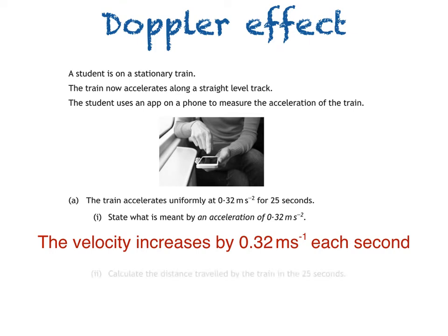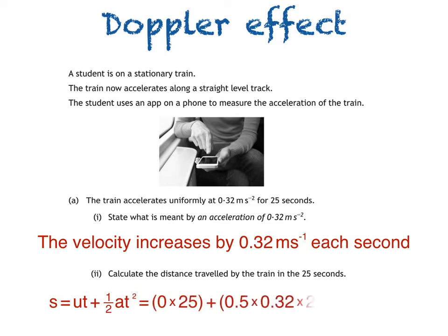Part 2 then asks us to calculate the distance travelled by the train in 25 seconds. This is a fairly straightforward question, and to answer it we use an equation of motion. We're told the values of acceleration a and time t in the question, and we're also told that the train is initially stationary, so its initial velocity u is 0. When we substitute these values into the equation, we get an answer of 100 m.